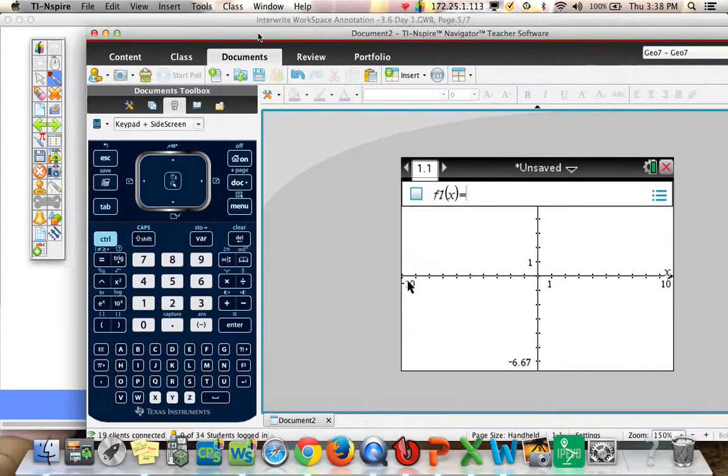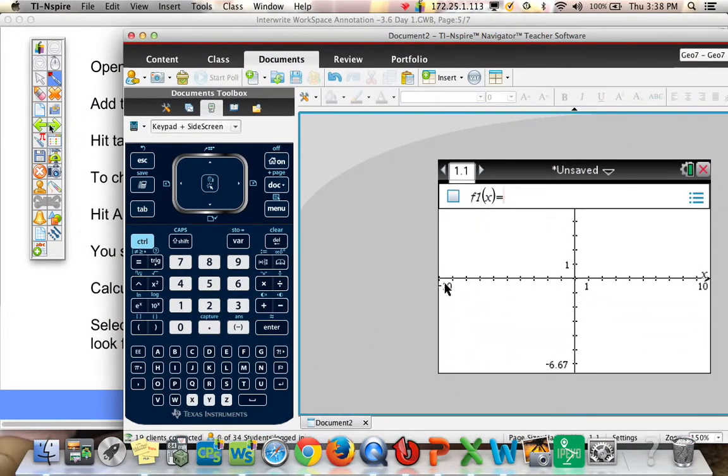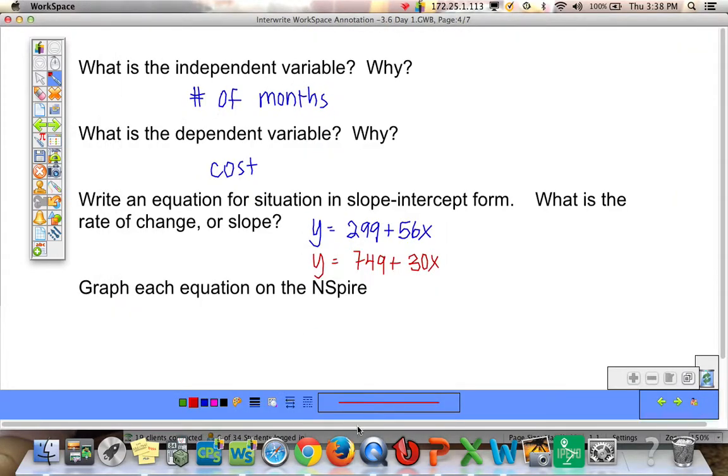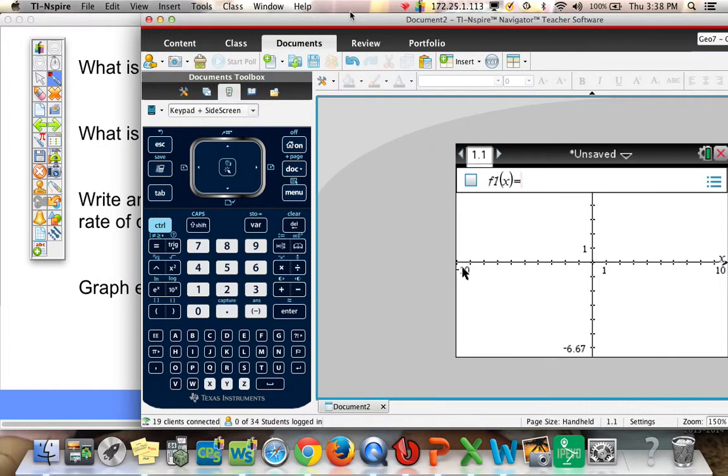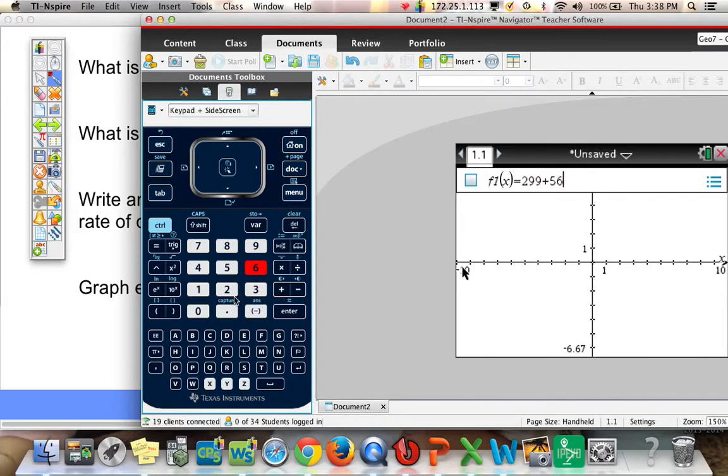So then we're going to type in the equation for the first situation. So again, we have $299 for the phone. So we have $299 plus it's $56 a month, so 56x.